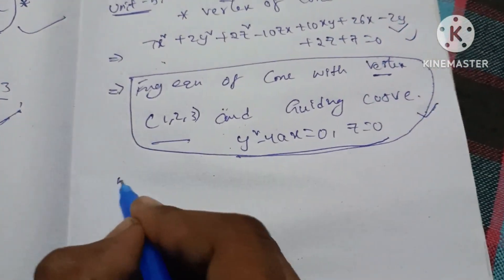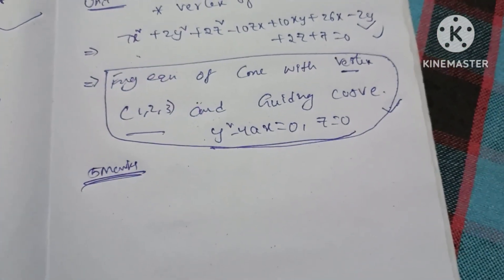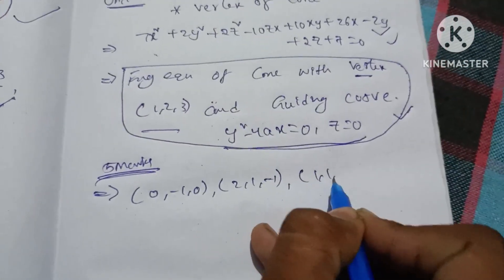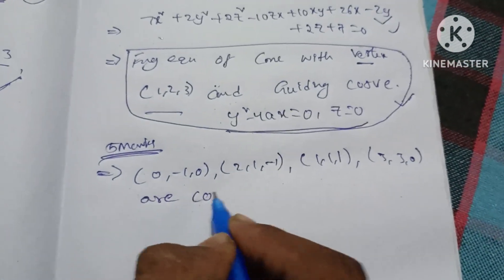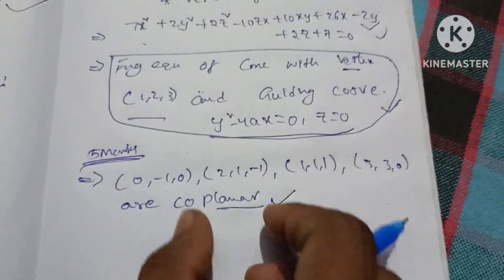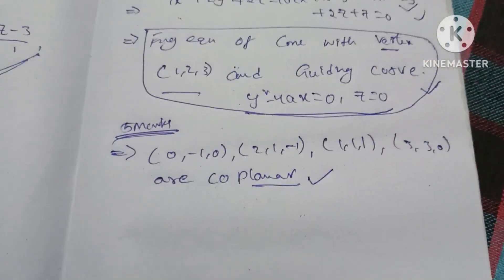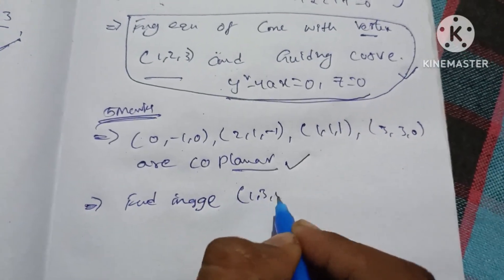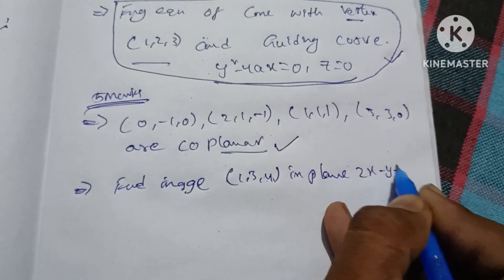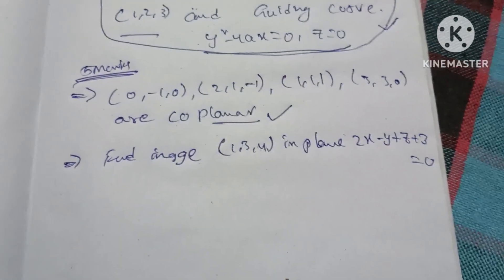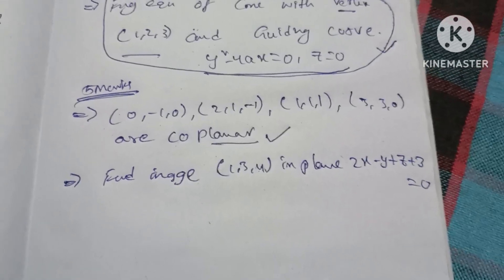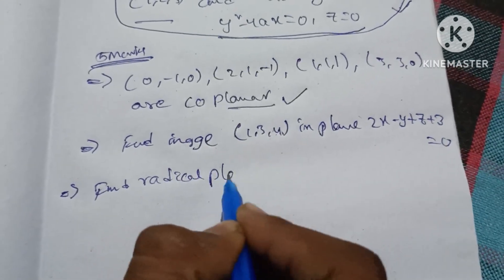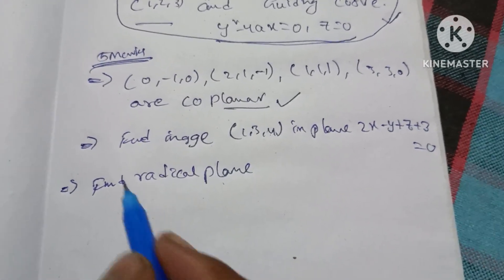Now let's talk about the 5-mark questions. Coplanar lines — this is 5 marks. Image of a point or plane — this is also an important question. If you have a point or a plane, you can use an image. You can also use a radical plane to find the equation.